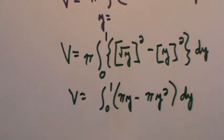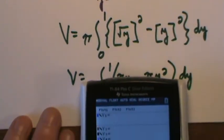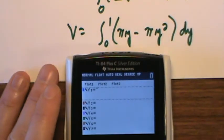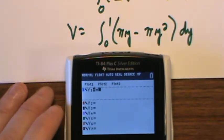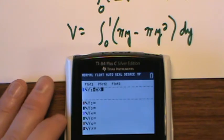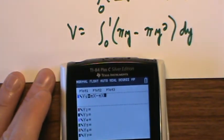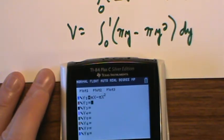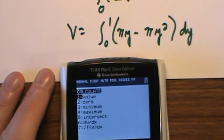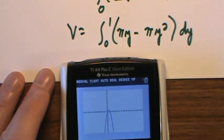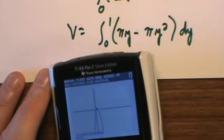I can put that in the old calculator. And as I go to my calculator, again I'm going to type these in as x's. So I'll do pi times x minus pi x squared. Option seven. And I will go from zero to one. So I start at zero. And I run to one. And I get .524.